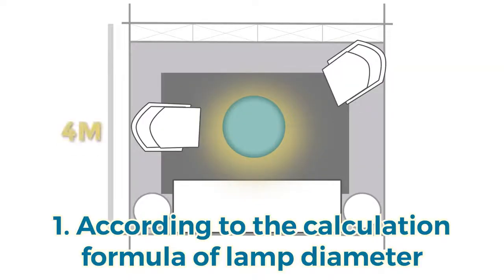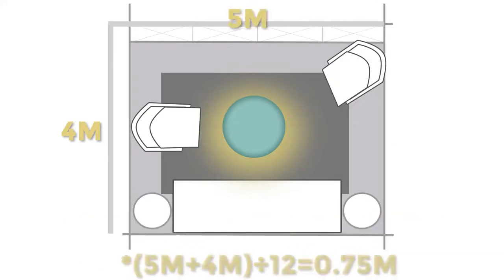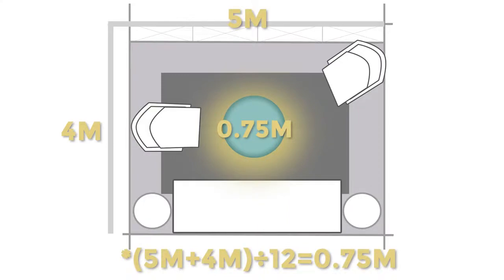According to the calculation formula of lamp diameter, divide the length and width of the selected area by 12 to get the most suitable lamp diameter. The upper and the lower can differ by 5 centimeters.